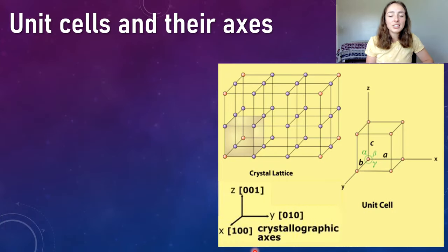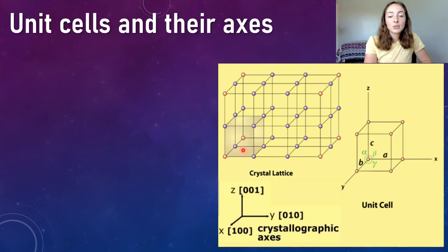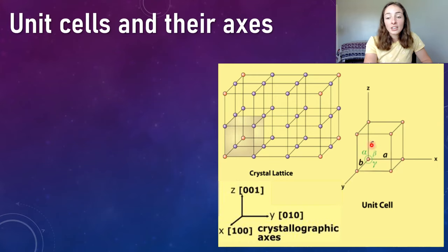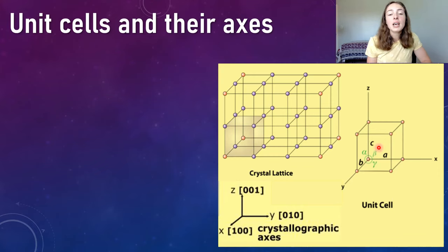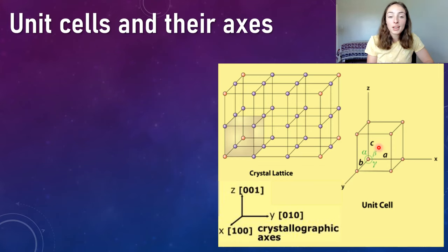Before jumping into Miller indices, we need to talk about how a crystal lattice is structured. A unit cell is the smallest repeated unit in a crystal lattice. You can add axes to it with edge lengths labeled A, B, and C and angles labeled alpha, beta, and gamma. With those, you can classify minerals into seven main crystal systems, which were covered in the crystal system song video. These axes will become important when determining Miller indices for planes.